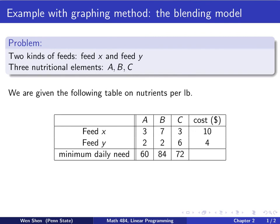In this table, let's look at it. So for feed X, it has three units of nutrient A, seven units of nutrient B, and three units of nutrient C. And for feed Y, the respective values for ABC nutrients are 2 and 2 and 6. And you see that this is lower and this is lower, although this is higher.